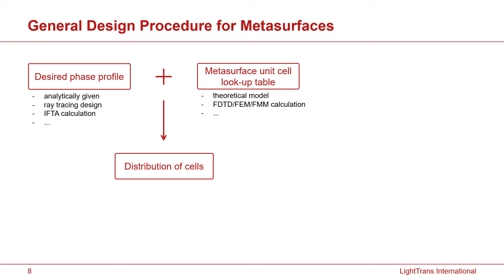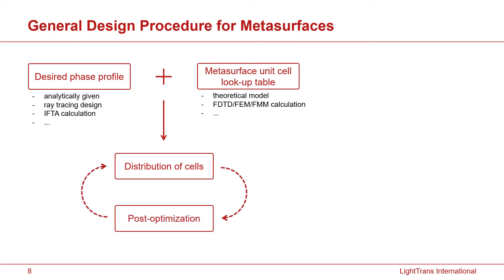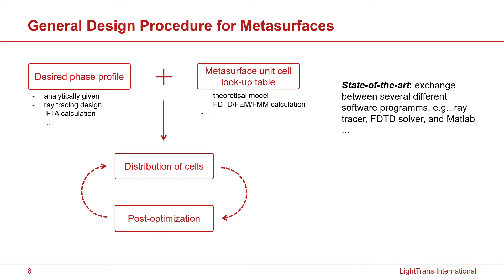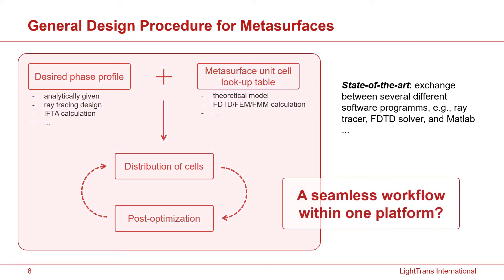With results from those procedures, you can distribute the unit cells of your meta-surface with different varying parameters over the whole surface. But this is just an initial design — the direct distribution of unit cells usually doesn't give optimized performance, so it is necessary to have a post-optimization procedure. Very often, people need to switch between different software packages, since ray tracing and FDTD functions are typically found in separate tools. Our aim with VirtualLab is to provide a seamless workflow within one platform.